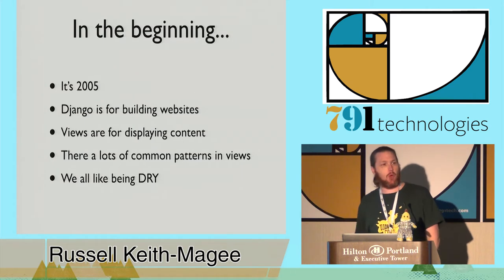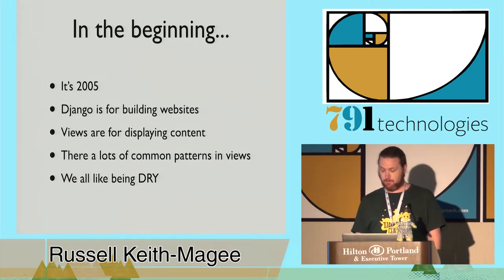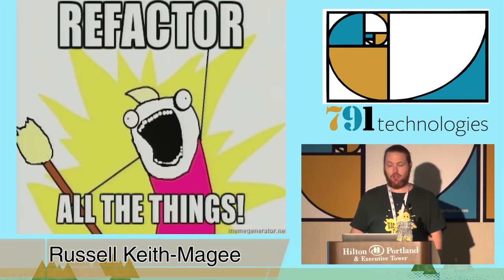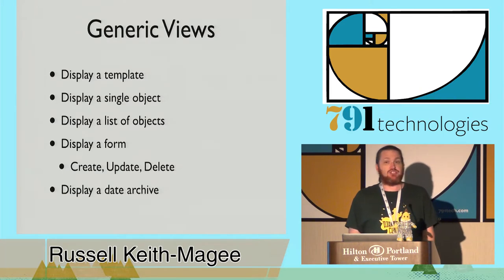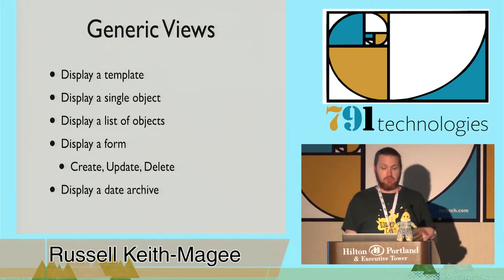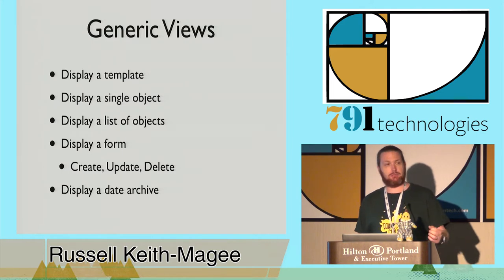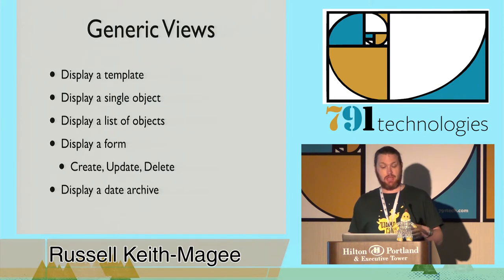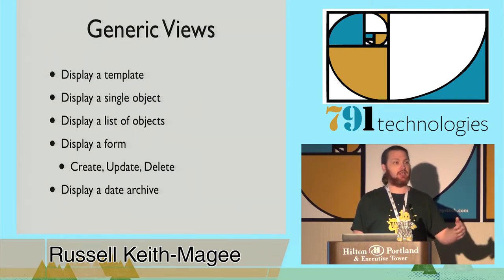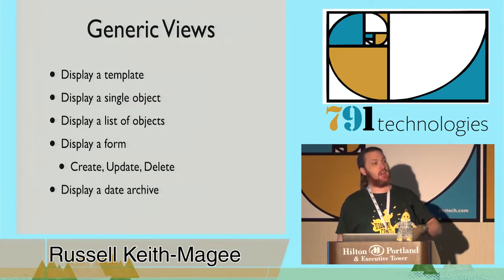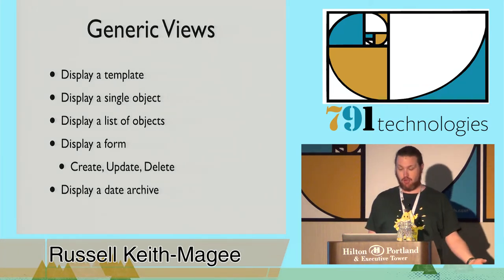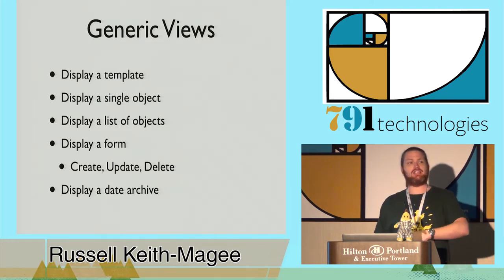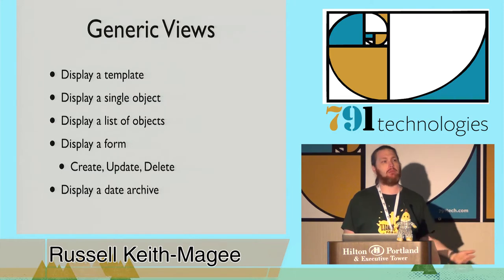Generic views were added because we had common problems we wanted to solve - to avoid reproducing the same code over and over again. You refactor the code and identify those key patterns. Generic views are there to do things like display a template, display a single object on a page, display a list of objects, display a form with create, update, and delete consequences, or display an archive of objects based on date. Remember, Django is coming from a strong journalism background, so a list of articles by date was a common problem people were trying to solve.